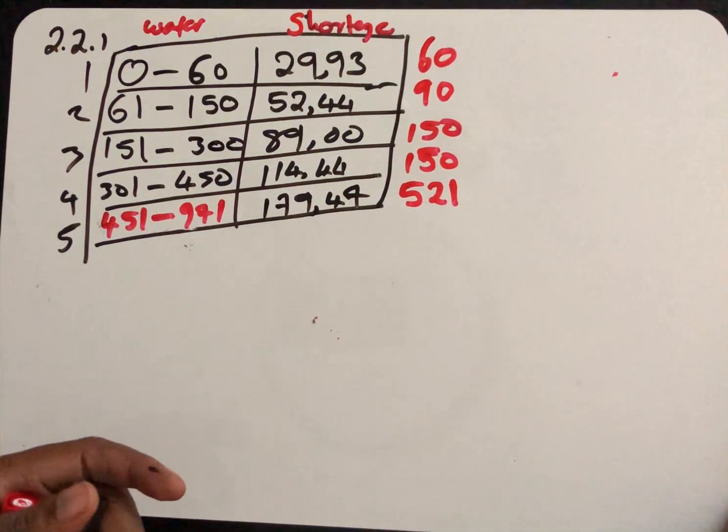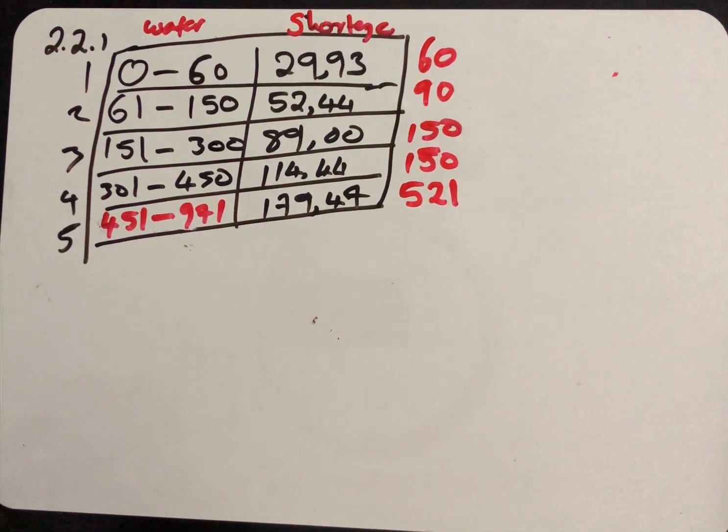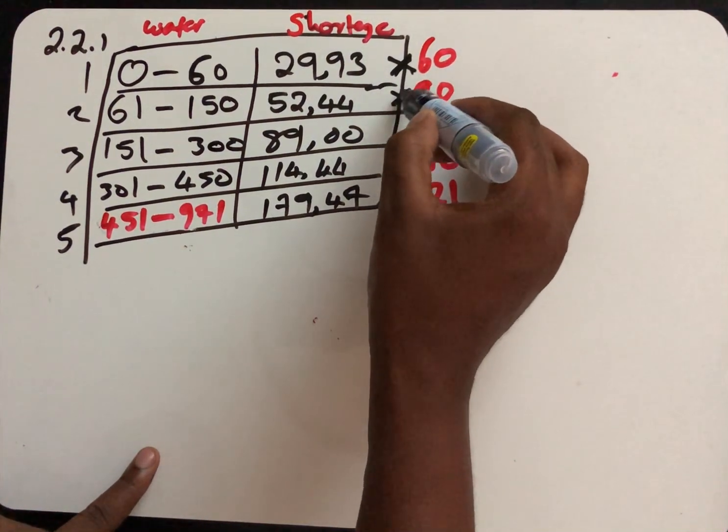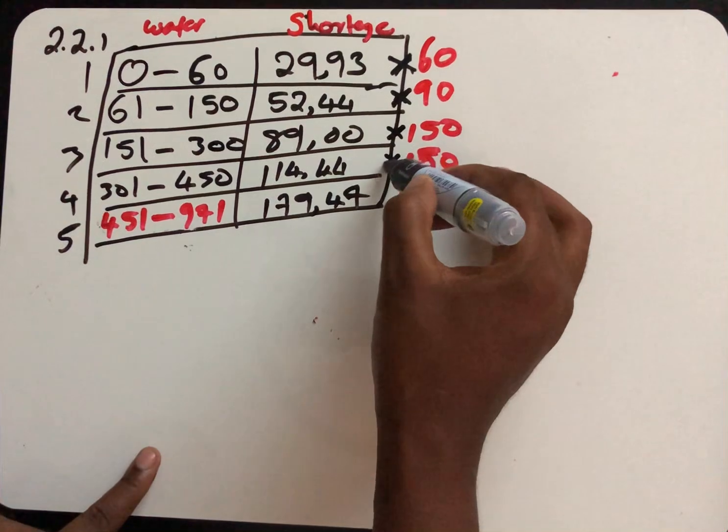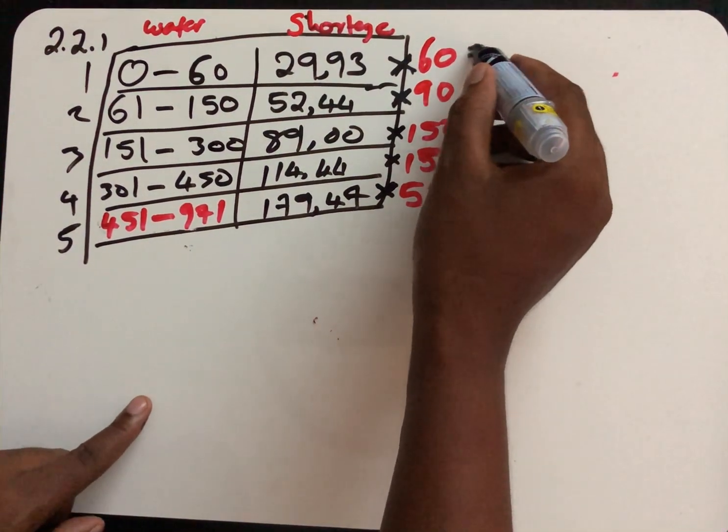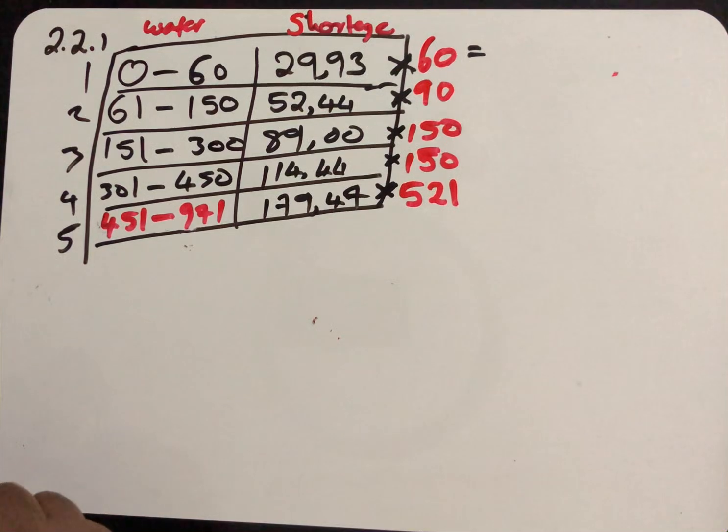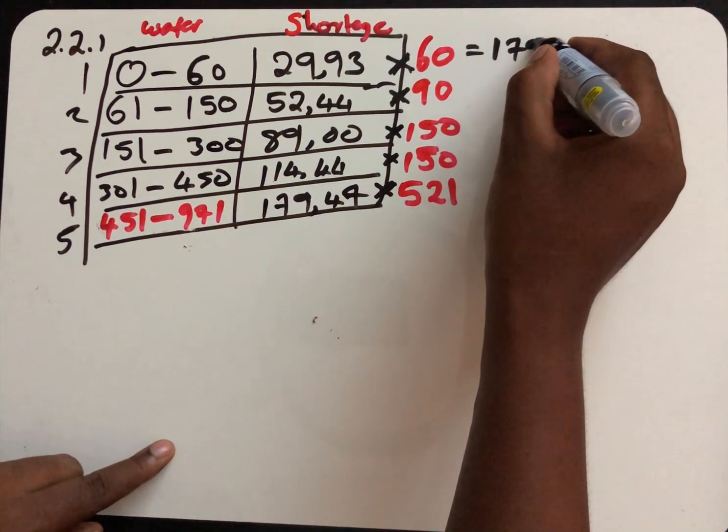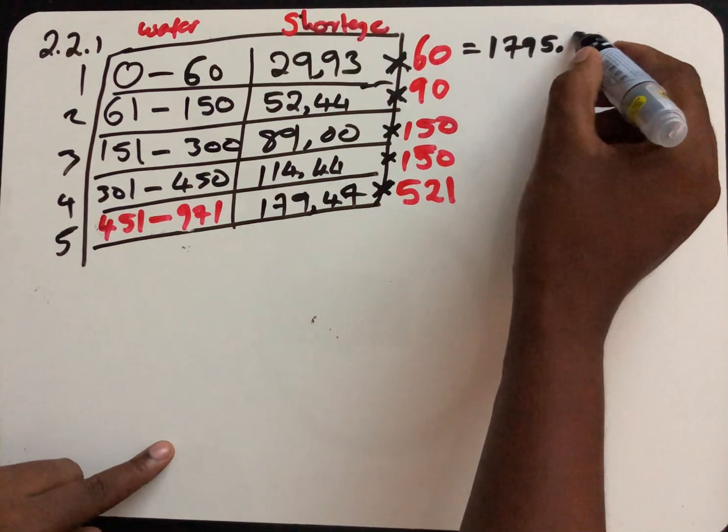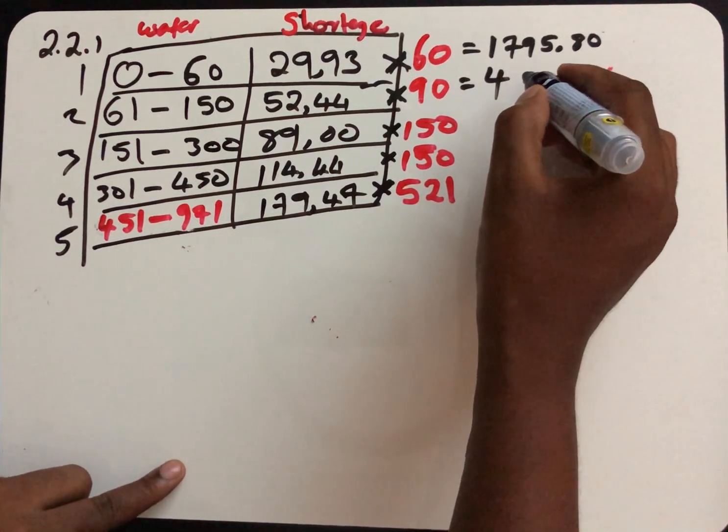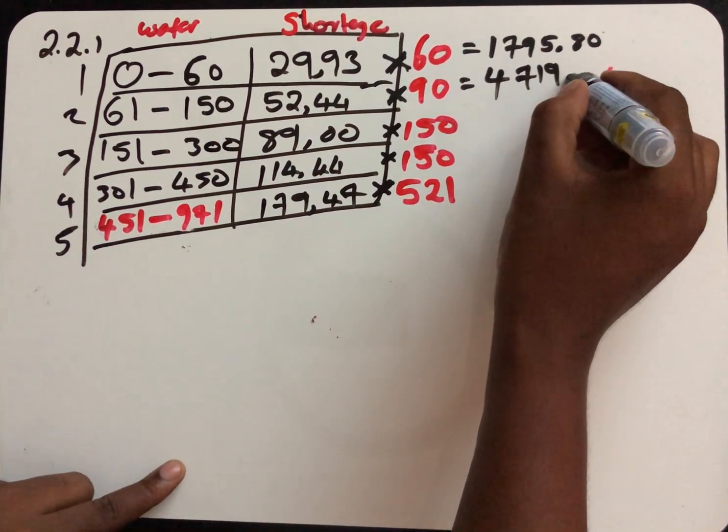So, the prices that we are using here, we are using prices under the shortage rate. We just multiply this together. The first one, we are going to have 29.93 multiplied by 60. This one is going to give us 1,795.80. Then, the second one is 52.44 multiplied by 90. We are going to get 4,719.60.